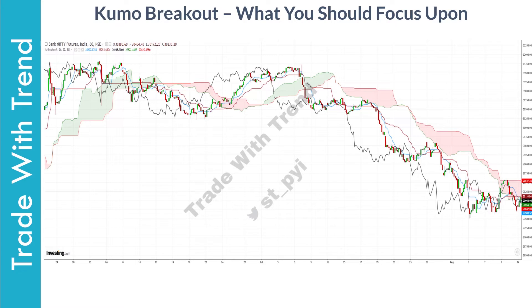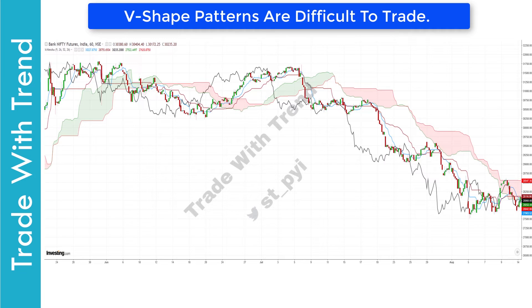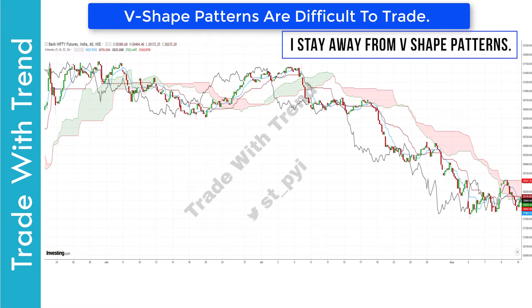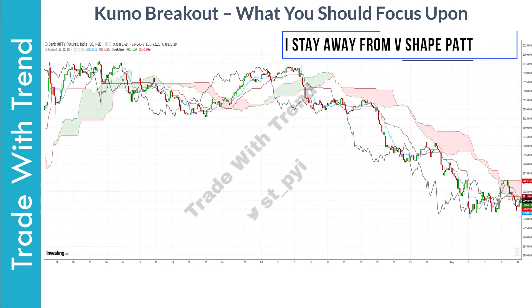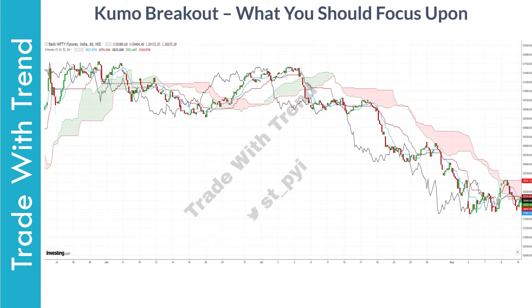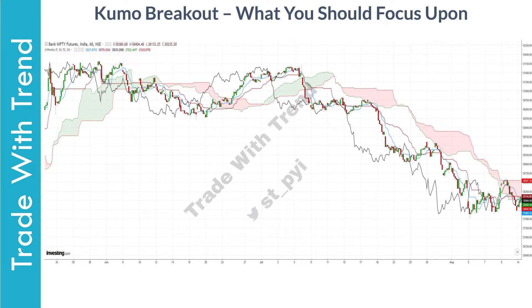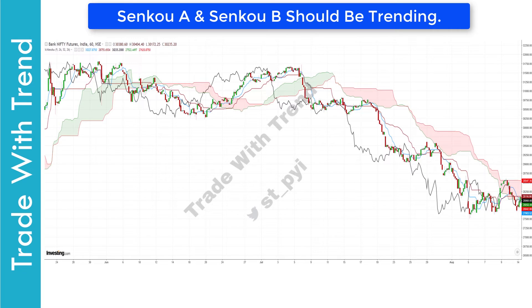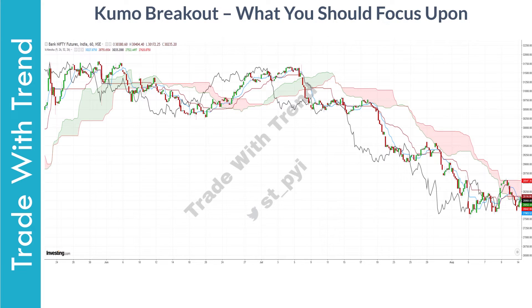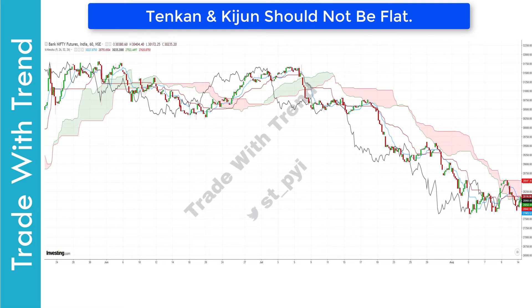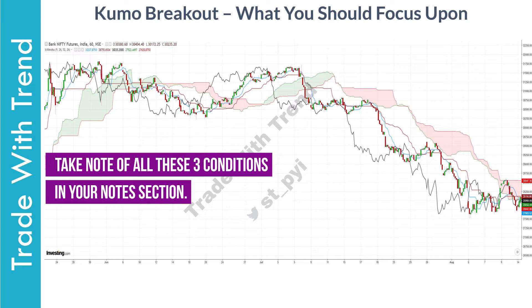Let me now explain the key things you should focus on while trading this Ichimoku Cloud strategy. The first element: consider whether price is coming out of a range or forming a V-shaped pattern. If price is forming a V-structure, reduce your position size as trading such patterns is always difficult. If price is consolidating in a range, this setup is more rewarding for a trader. The second element: both Senku A and Senku B should be clearly trending — up or down, the main condition is that they are clearly trending. The third element: both Tenkan and Kijun should be trending, and Chikko should be clearly above or below price, depending on whether you're taking a long or short trade.